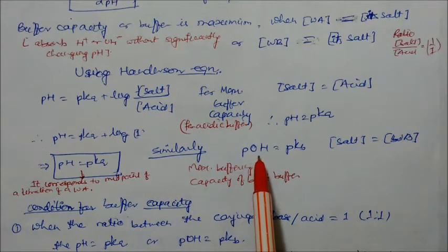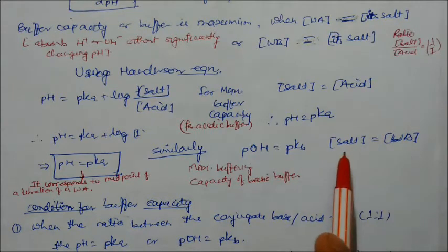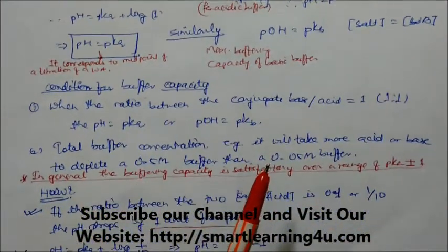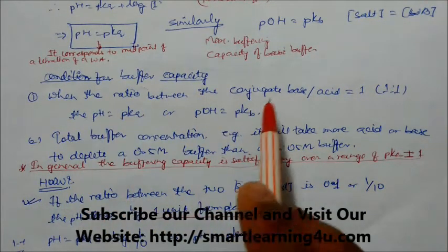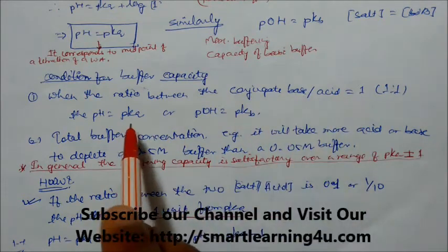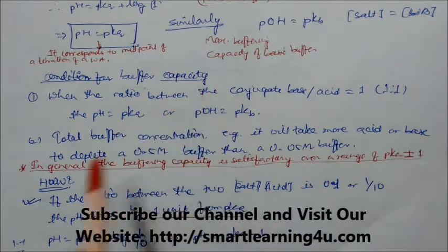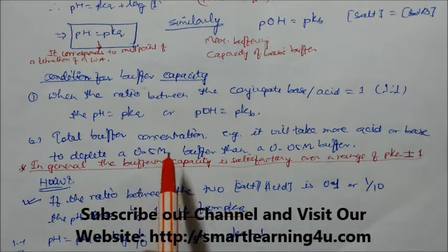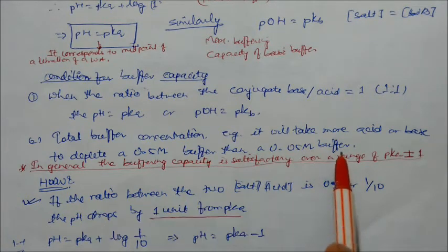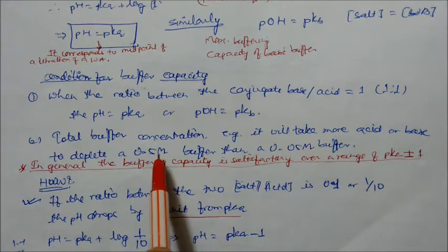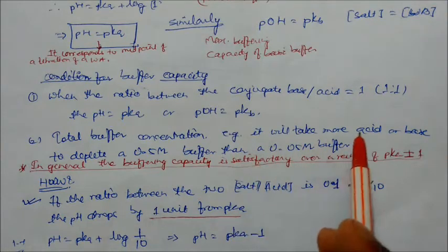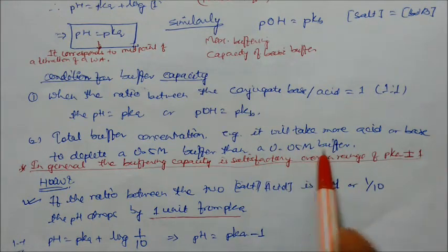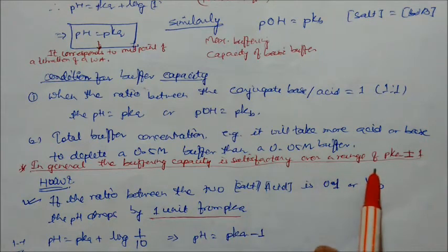Similarly, for a basic buffer, pOH equals pKb when the concentration of the weak base equals the concentration of salt — this is the maximum buffer capacity for a basic buffer. The second condition is total buffer concentration: it will take more acid or base to deplete a 0.5 molar buffer than a 0.05 molar buffer. A higher concentration buffer requires more acid or base to change the pH.